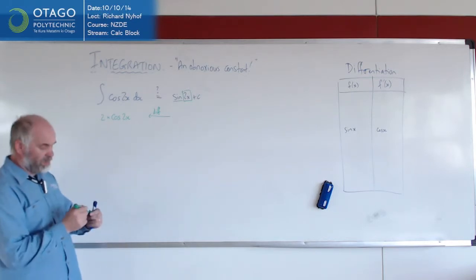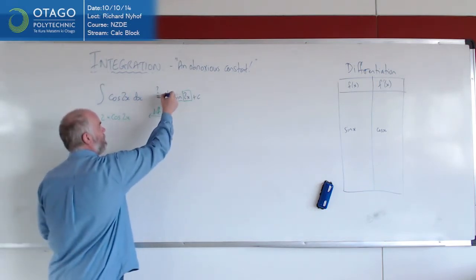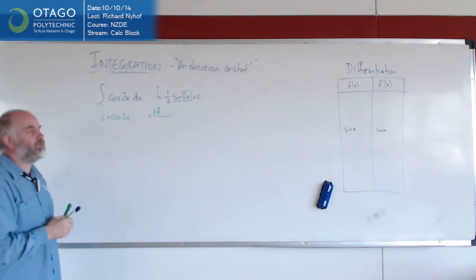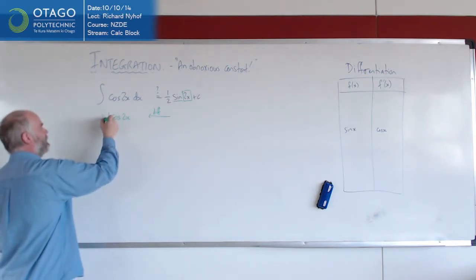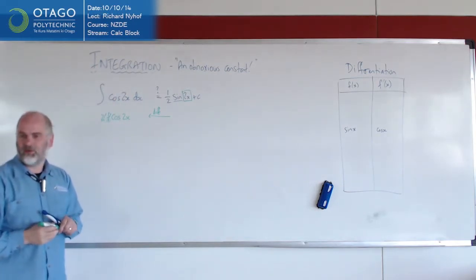So we need some way of dealing with that 2. And all we have to do is put a half in there. Because then when we differentiate back, we've got that half in there. And then the half and the 2 cancel out, and we end up where we want it to be.